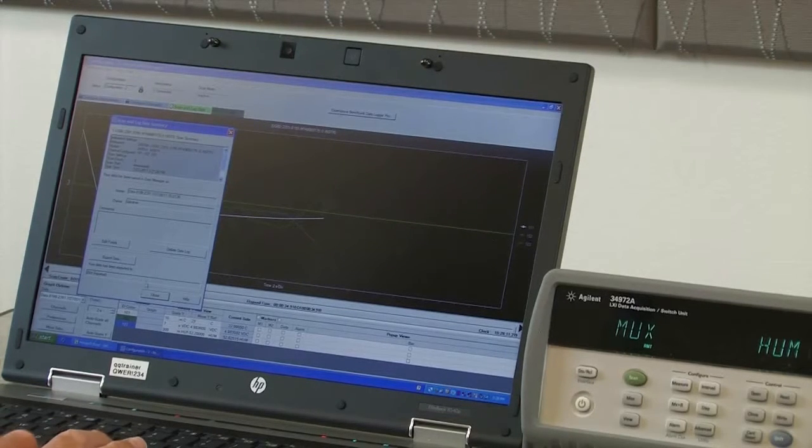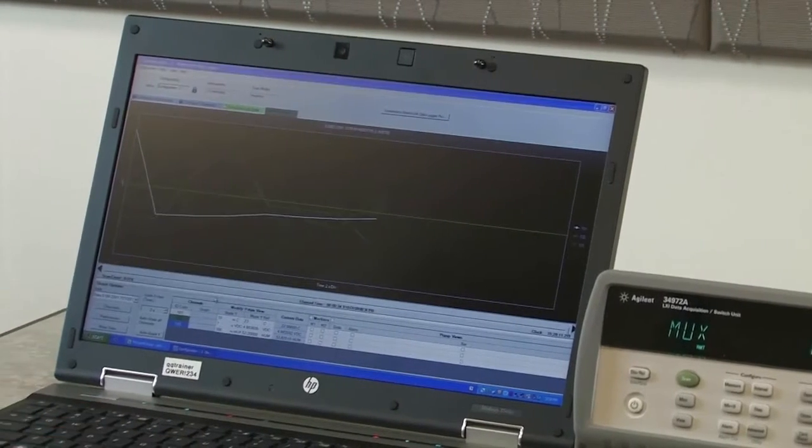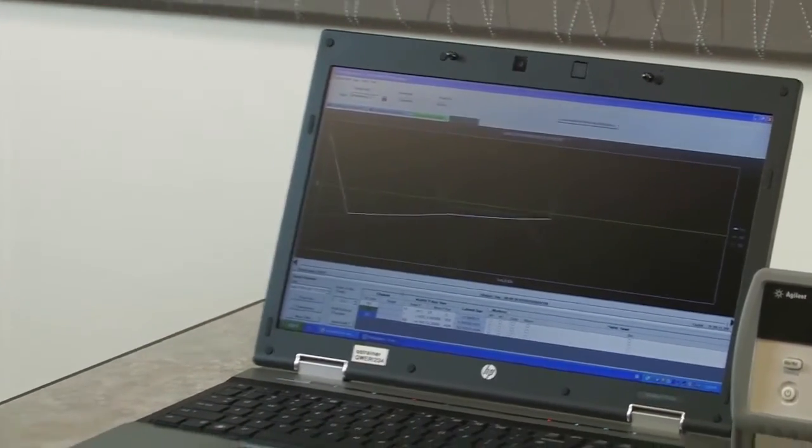After about eight scans, we completed our graph. So as you can see, it's very easy to set up the 34972, either from the front panel or using the free BenchLink Data Logger software, to make humidity measurements.